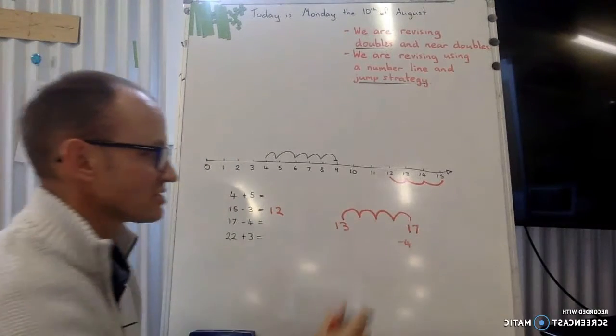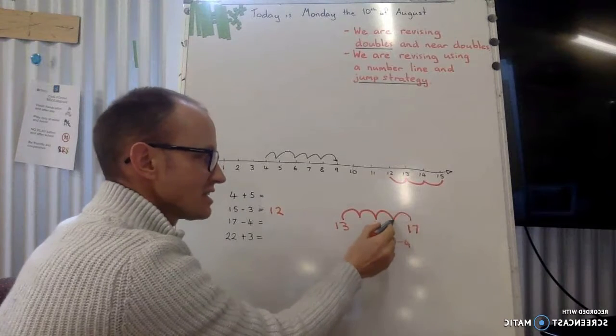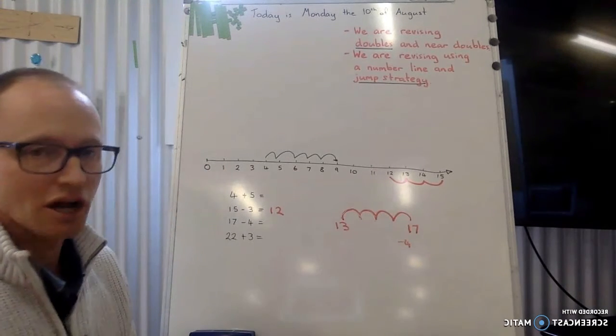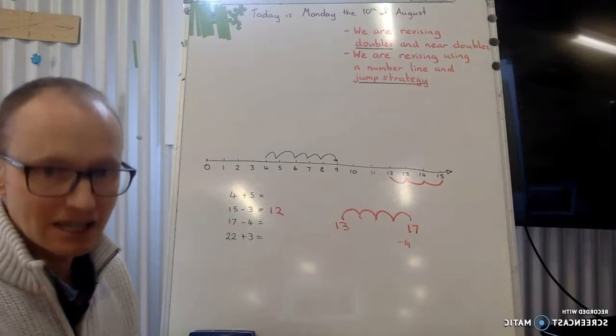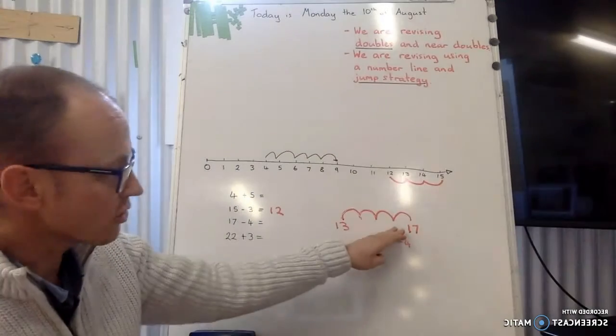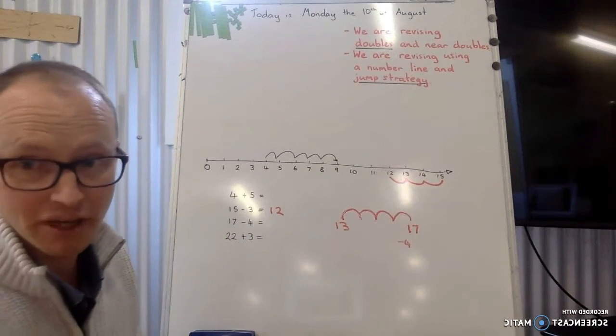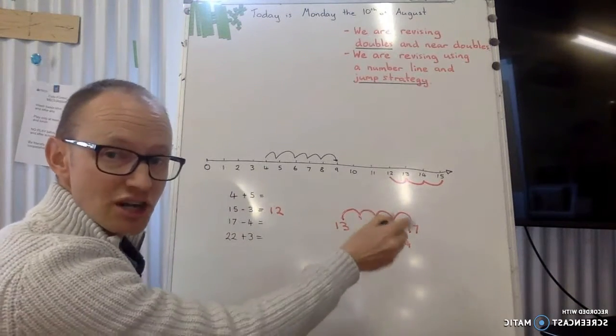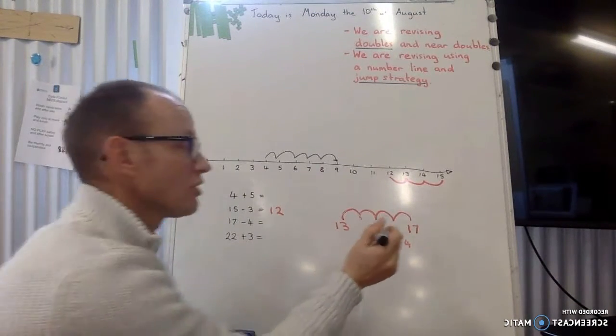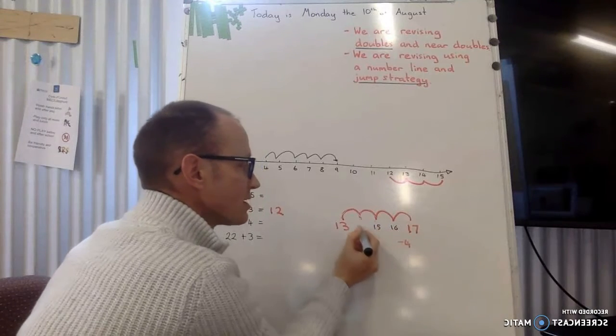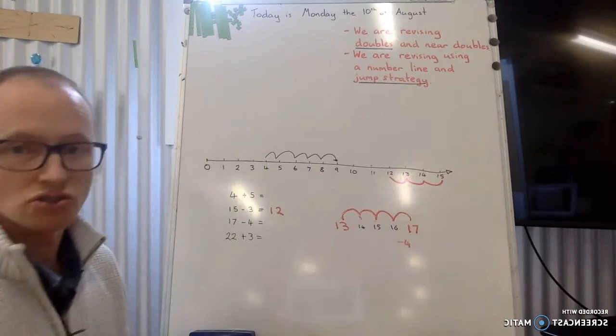You see how I use the number line? So I'm starting at the 17, 16, 15, 14, 13. Jumping backwards. Now again, I know that the numbers are in there, and if I wasn't too sure and I want to just check, I could actually write them in. And you can do it both ways. Either just jumping like that if you're feeling happy about it, or you can write the numbers that you are jumping backwards to do it.